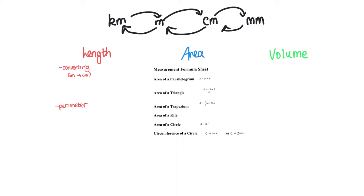So let's start with length. Length is about measuring lines. There are four main units we use for measuring length: kilometres, metres, centimetres, and millimetres. To start off your conversion chart, look at your ruler, which you can take into a test, and see in one centimetre how many millimetres there are — and that's ten. Once you fill that in, the rest is super easy because we just keep adding zeros, and then the other side is just division with those same numbers.